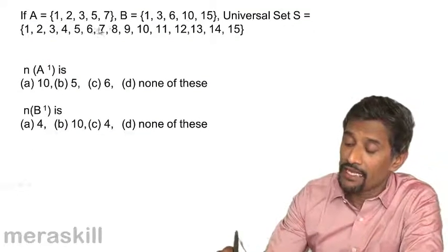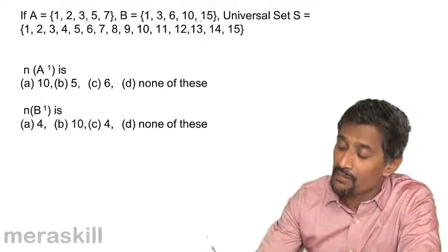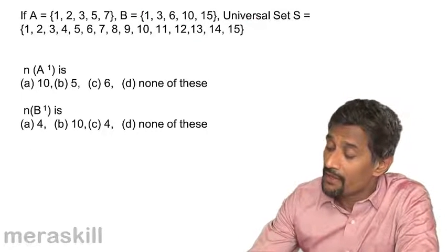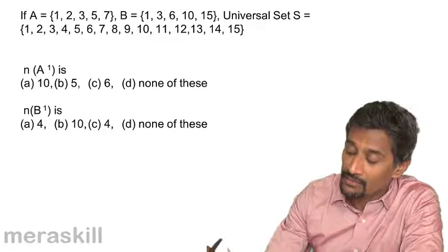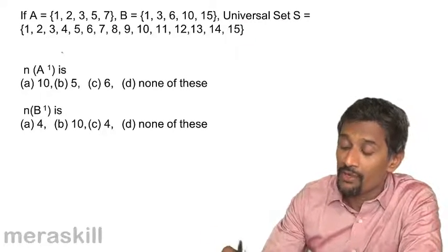Now let's see this. A is 1, 2, 3, 5, 7, B is 1, 3, 6, 10, 15 and universal set is 1, 2, 3, 4, 5, 6, 7, 8, 9, 10, 11, 12, 13, 14, 15. So n of A dash.